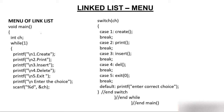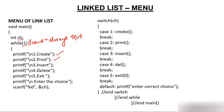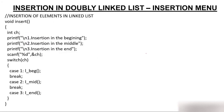In the main function we have created an integer variable ch. While(1) means the condition is always true — anything other than zero is always true. Inside the while loop you get print statements: press 1 to create, 2 to print, 3 to insert, 4 to delete, 5 to exit. Suppose you want to insert, so you press 3. The ch will have value 3, the switch jumps to case 3, and in case 3 we are calling a function called insert.